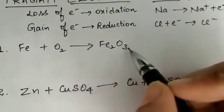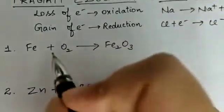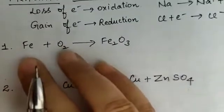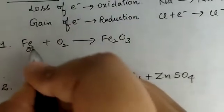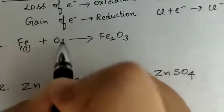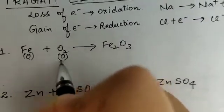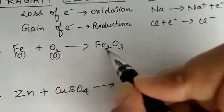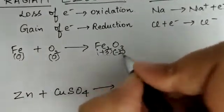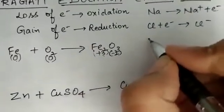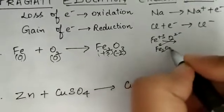So if I have a reaction, how will I identify which particular process is oxidation and which is reduction? If any element has no charge, like iron present in its elemental form, we write its oxidation state as 0. Oxygen with no charge in elemental form is also 0. All gases in elemental form are assigned value 0. In Fe₂O₃, Fe carries plus 3 charge and oxygen carries minus 2 charge.